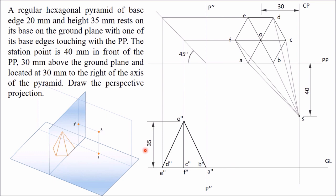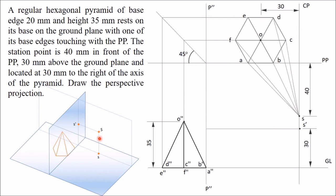Once you get the side view, you need the side view of the station point. Before that, draw the front view of this station point — it is on the central plane. This is the front view, S dash, obtained at a distance of 30 mm from the ground line. Once you get S dash, the side view will be beside the front view, because the side view is always beside the front view. In this line you will get the side view of this station point.